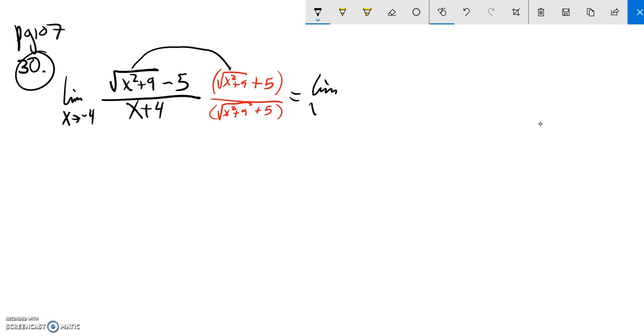So limit as x approaches negative 4 of, this times this is x squared plus 9, negative 5 times positive 5 is negative 25, and then my middle term drops out because I have negative 5 of those, positive 5 of those. The denominator is x plus 4 times that conjugate. I'm not going to combine those, because what I'm hoping will happen is that x plus 4 will end up canceling out.